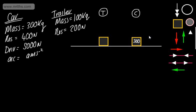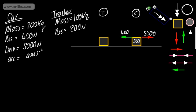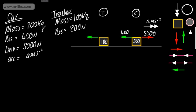We've got resistance to motion of 400 newtons in the opposite direction to the driving force. The driving force of 5,000 newtons acts in the direction from trailer to car. The acceleration is a meters per second squared. For the trailer, the resistance to motion is 200 newtons opposing the motion — so opposing the direction from trailer to car.